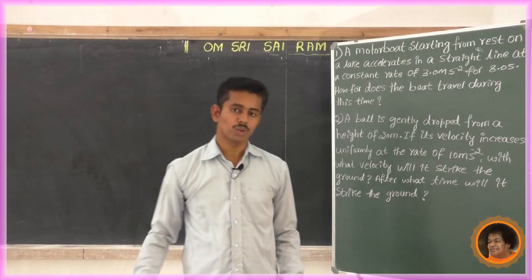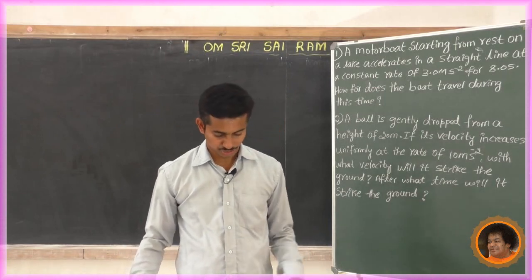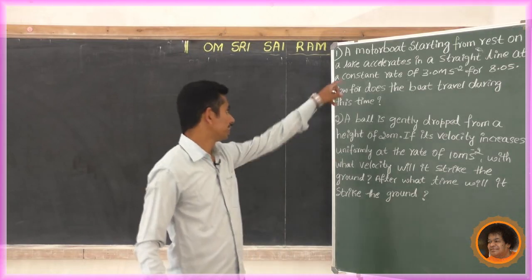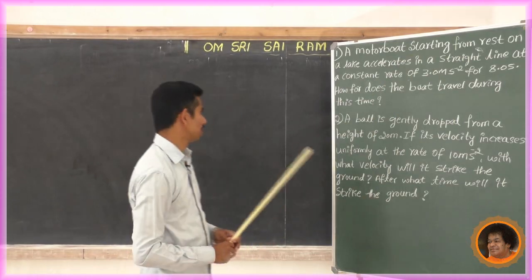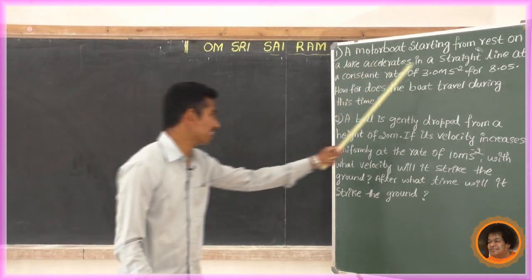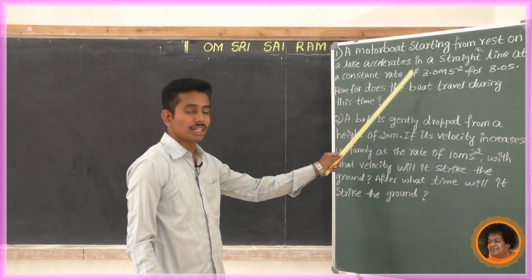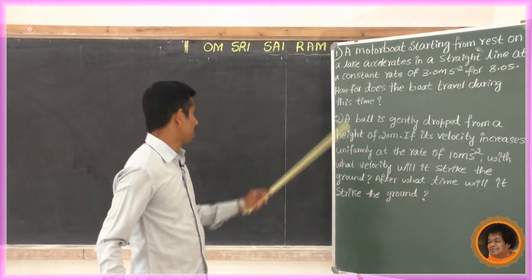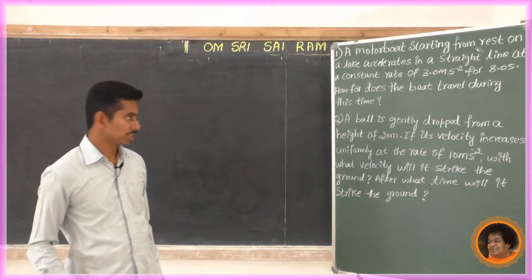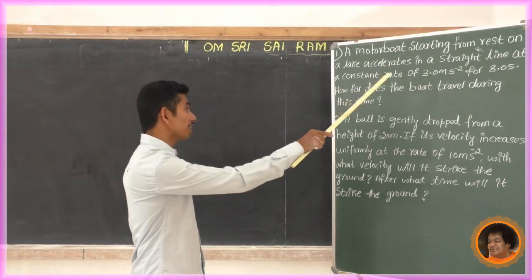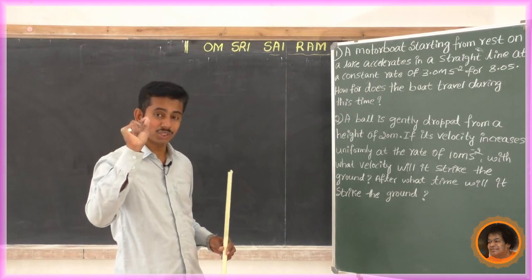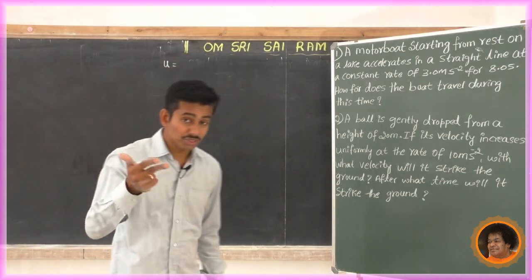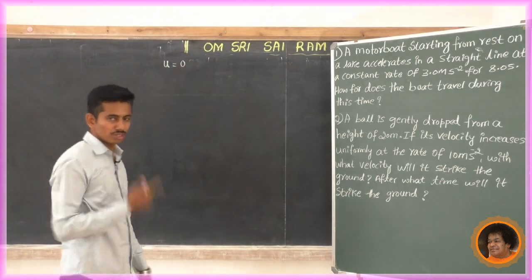Go through the textbook, page number 112. There are many problems in the exercise, problems 1 to 10. Look at the fourth problem: 'A motorboat starting from rest on a lake accelerates in a straight line at a constant rate of 3.0 m/s² for 8 seconds. How far does the boat travel during this time?' Starting from rest means the initial velocity u = 0 m/s.